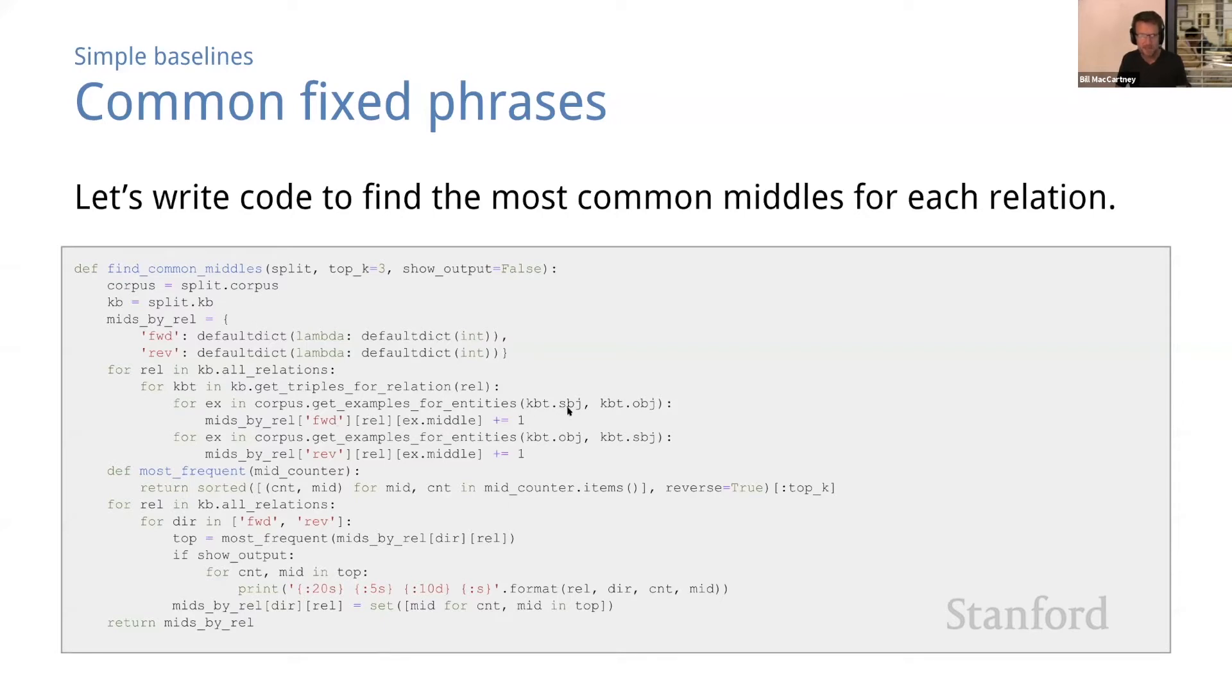I won't go through it in detail, but one thing to note is that it counts separately the middles that connect subject with object—it gets all the examples and counts the middles, tallies up the middles—and it does that separately from the examples that connect object with subject. It stores them in separate dictionaries under the keys forward and reverse. So we're going to have forward middles and reverse middles stored and counted separately.